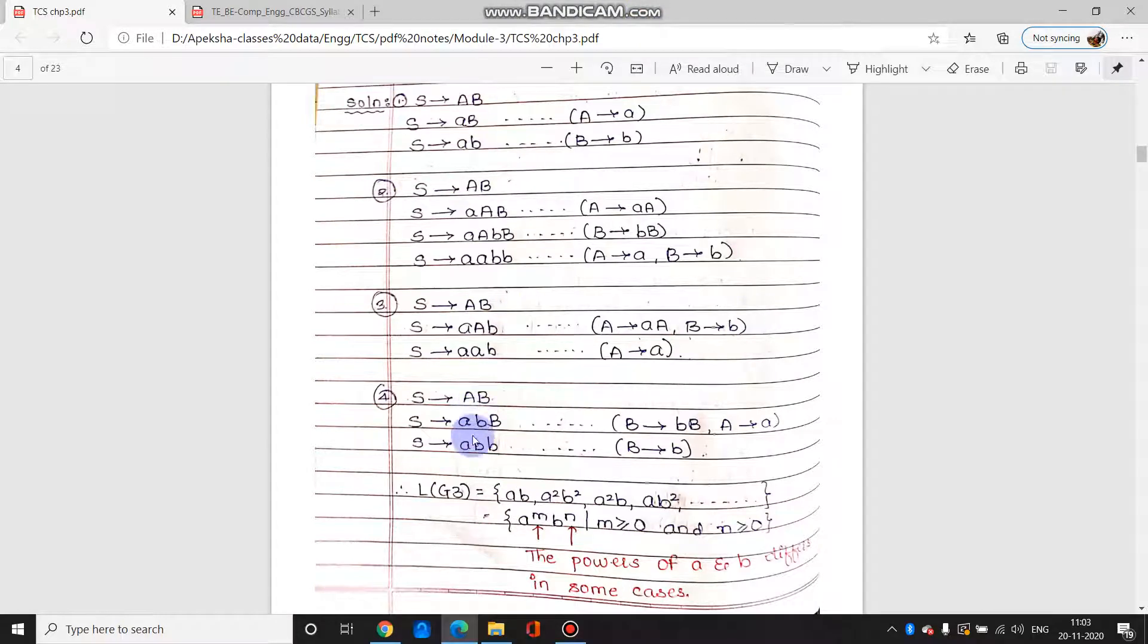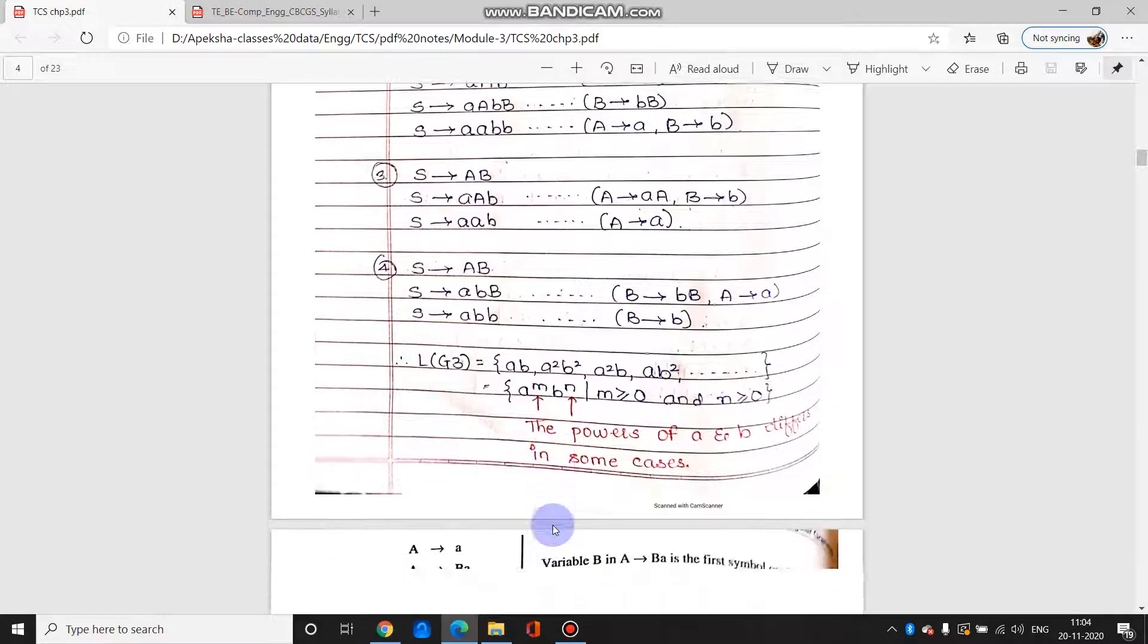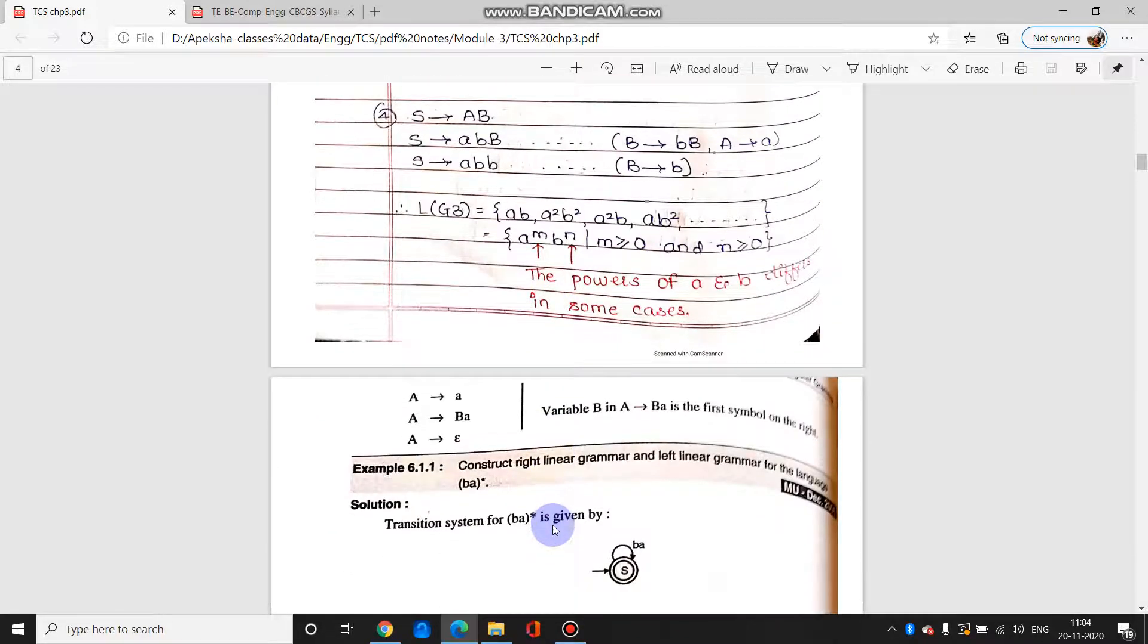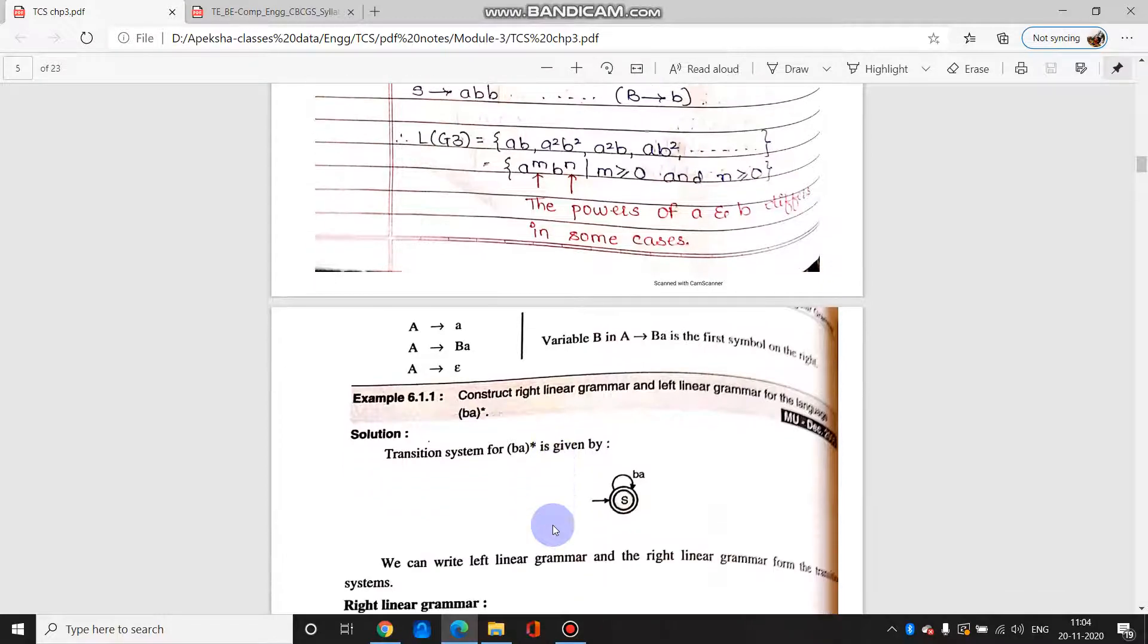So we are telling that it is generating a language of a raised to m b raised to n, where m is greater than 0 and n is also greater than or equal to 0. This is how we derive a string and convert it into a simple language. If you remember, in the last lecture we had automata DFA solved. So this was all about left linear, right linear grammar and derivations from the grammar.